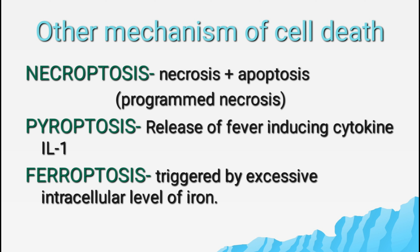Other mechanisms of cell death include necroptosis, pyroptosis, and ferroptosis. Necroptosis is a combination of necrosis and apoptosis, also known as programmed necrosis. Pyroptosis — 'pyro' meaning fever — is a form of cell death accompanied by release of the fever-inducing cytokine interleukin-1. Ferroptosis is a form of death triggered by excessive intracellular iron or when reactive oxygen species overwhelm the glutathione-dependent antioxidant defense.